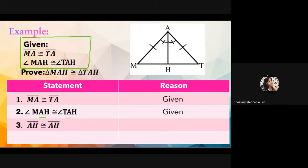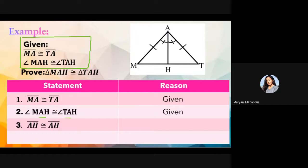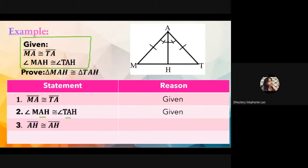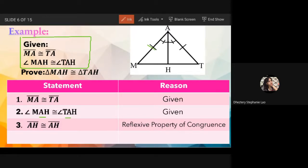What is the reason? Mariani answers: reflexive property of congruence. Correct! The reason is reflexive property of congruence. Remember what was reviewed earlier. Now we have found one side, one included angle, and a second side.